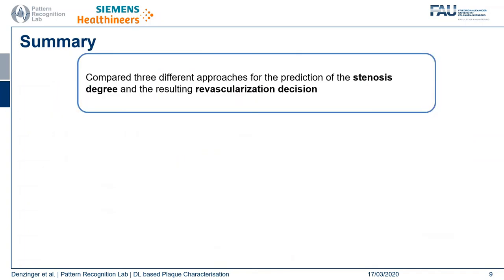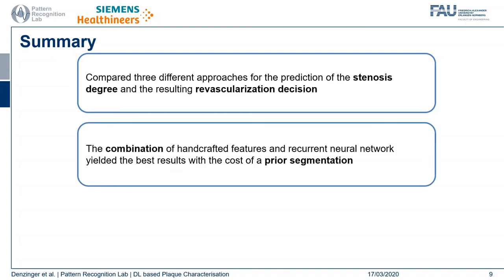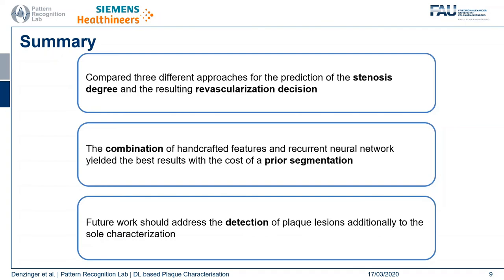To summarize, we compared three different approaches to predict the stenosis degree and the resulting revascularization decision. We see that the combination of handcrafted features from the radiomics-based approach with the recurrent neural network yielded by far the best results, at the cost of requiring prior segmentation. This work did not address detection of plaque lesions, which should be part of future work. Thank you for your attention and I am open for questions in the comments.